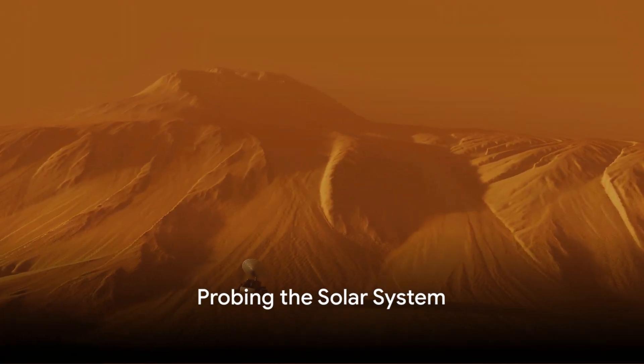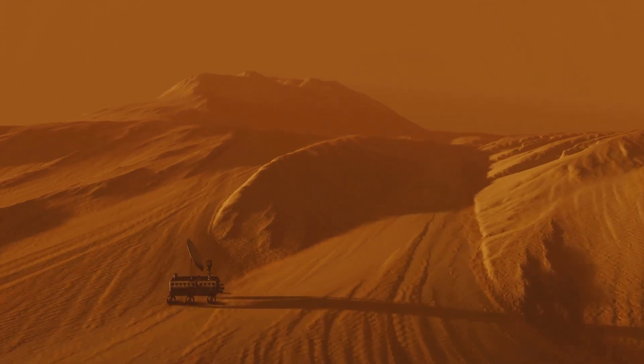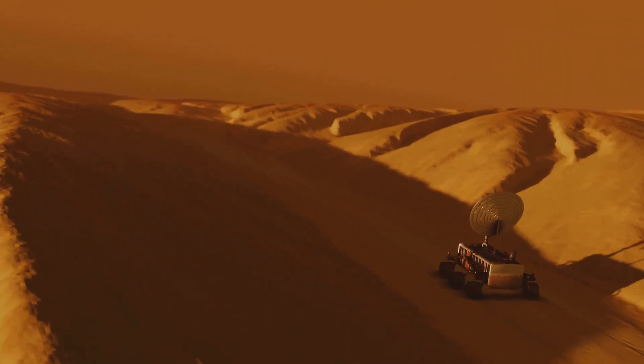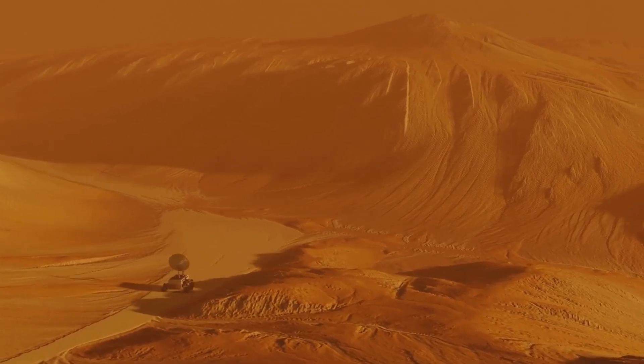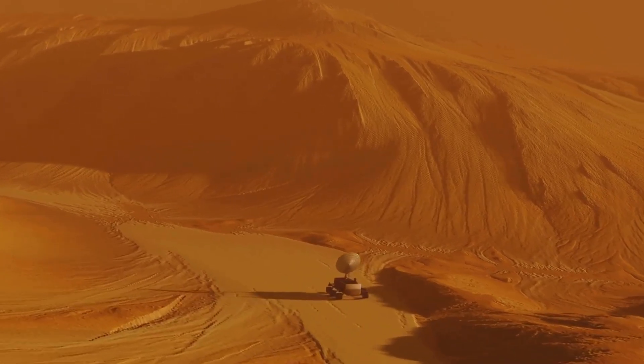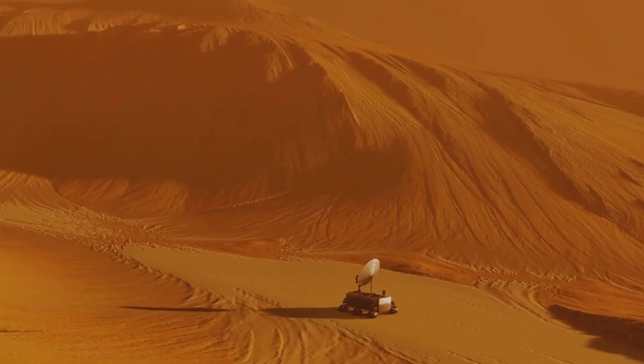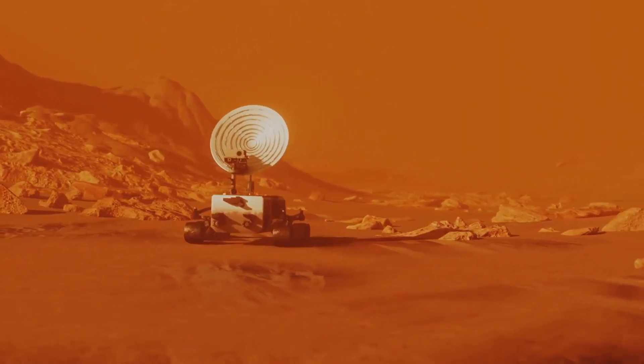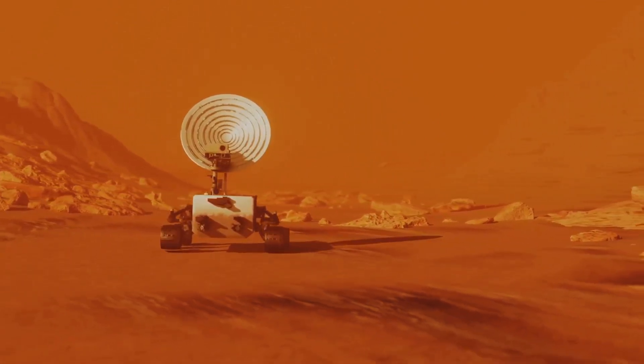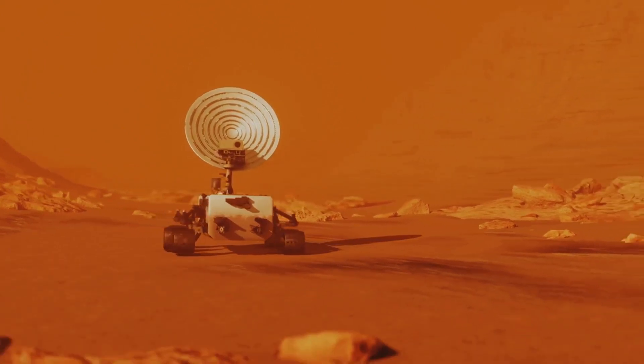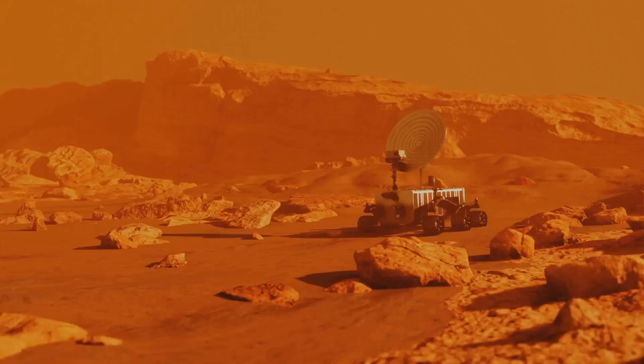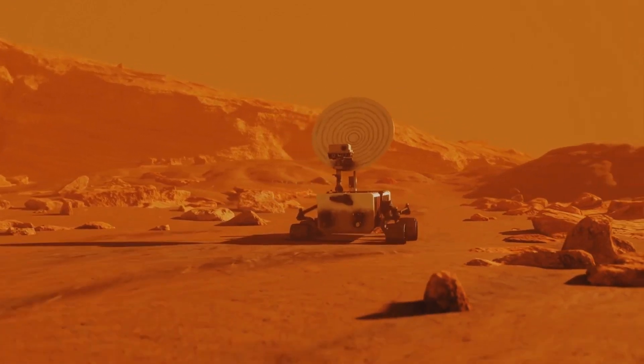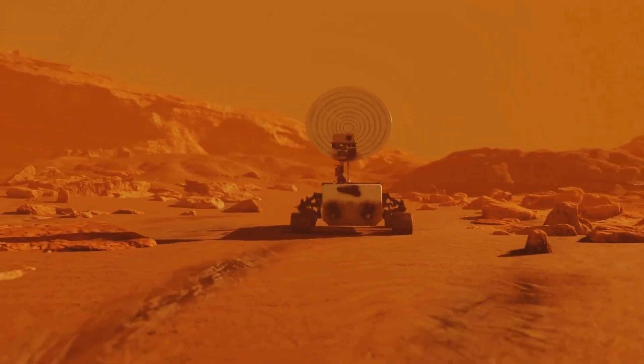Even within our own solar system, the speed of light plays a crucial role. It's the cosmic speed limit, the fastest anything can travel. But how does this affect our exploration and communication within the solar system? Let's start with communication. You may not realize it, but when you watch footage from the Mars rovers, you're seeing the red planet as it was minutes ago, not as it is right now. This is because it takes light, and therefore the information it carries, anywhere from 3 to 22 minutes to travel from Mars to Earth, depending on our planet's positions in their orbits. This light speed delay poses unique challenges. Imagine trying to drive a rover on Mars, but every command you send takes minutes to reach its destination. It's like driving with a delay, and it requires careful planning and patience from our scientists and engineers.